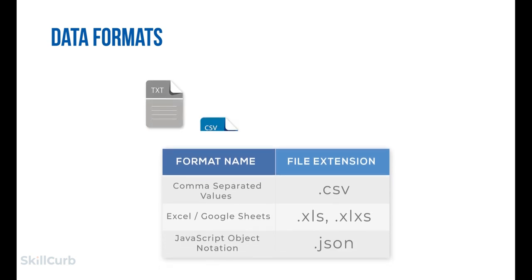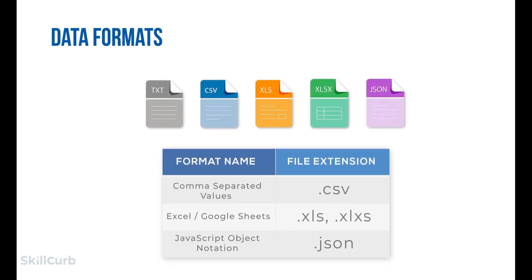When talking about a dataset for machine learning, data format is of great importance. Understanding the basic data formats and manipulating them can be helpful for getting fruitful results. You might get data in one of many formats — CSV, text, JSON, XLS, or other formats. Each format has a different layout and a different look and feel.